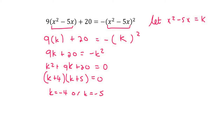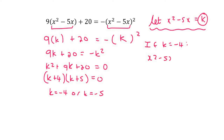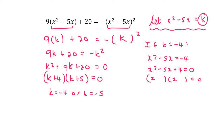Now, remember, that's not the answer. What we now do is come back here and say: if k equals negative 4, then we plug that in, so x² minus 5x equals negative 4, then x² minus 5x plus 4 equals zero. Then you can make your double brackets — x minus 4, x minus 1.